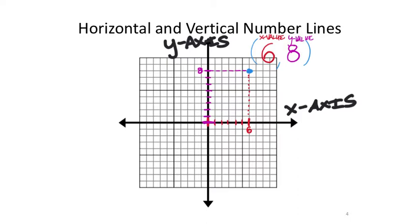Mathematically speaking, we say positive 6 and then positive 8. That gives us an ordered pair — that's what it's called. So when I say we're looking at the ordered pair (6, 8), we know we're looking at this location on the grid.